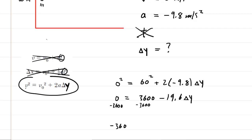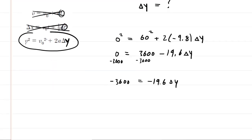This gives us negative 3600 is equal to negative 19.6 times delta y. And then to solve for delta y, we'll just divide both sides by the negative 19.6. And when we do that, we will get a value of 184 meters approximately is equal to delta y. That is the correct answer to part A of the question.